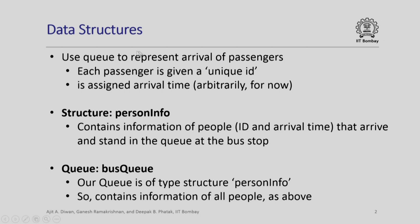First we discuss the data structures required to simulate the bus queue. We will use queues to represent the arrival of passengers. Each passenger is given a unique ID — an artificial ID that helps us identify the person who leaves and calculate the corresponding waiting time. Each person is also assigned an arrival time, done arbitrarily for now. We store this information in a structure called PersonInfo, which contains the person ID and arrival time.